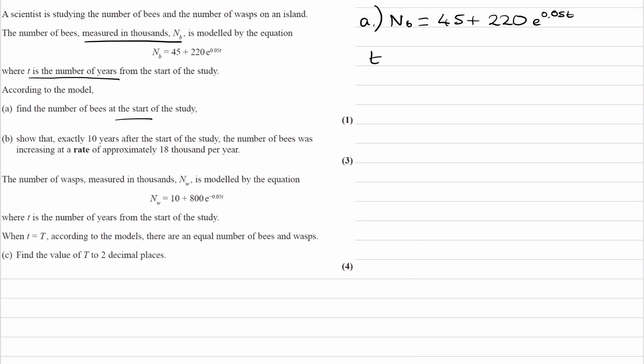At the start means that t equals 0, so we can just put that into our equation and work out what nb is. So nb is 45 plus 220 e to the power of 0. e to the power of 0 is just 1, so this becomes 265. The question wants the number of bees at the start of the study, but nb is measured in thousands. So our answer would be 265,000.